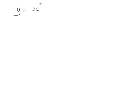Now we're going to be looking at the quotient rule, which is where you've got things like x squared plus 5 to the power of 3 divided by 4x. So basically we've got two things, two functions, where one is divided by the other.